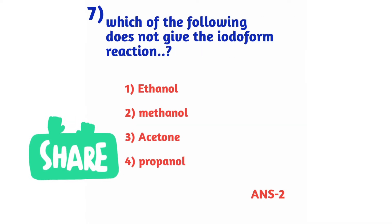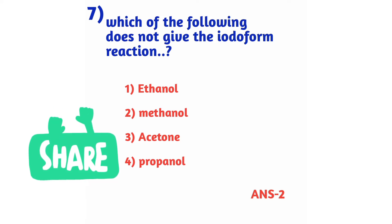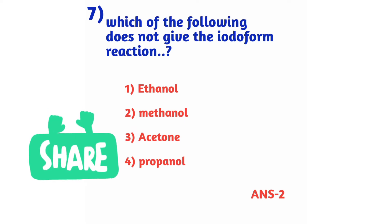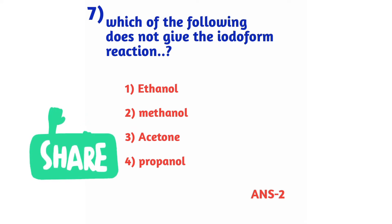Question number 7: Which of the following does not give the iodoform reaction? Iodoform reaction is very important from both theory and examination point of view. Option 1: ethanol, option 2: methanol, option 3: acetone, option 4: propanol. The right answer is option 2, methanol.